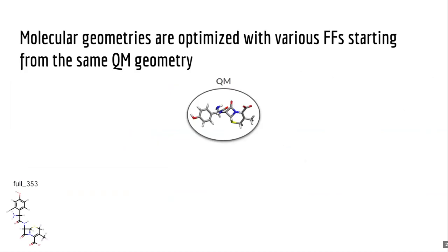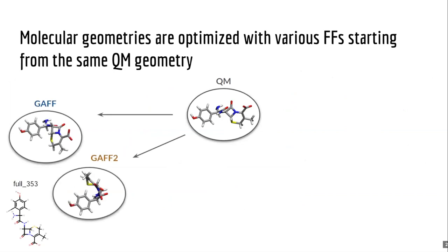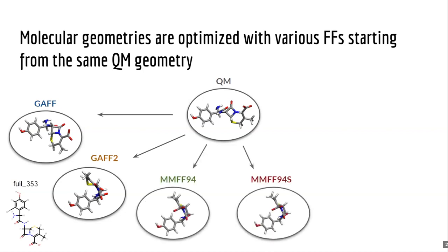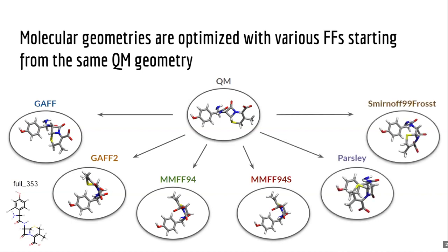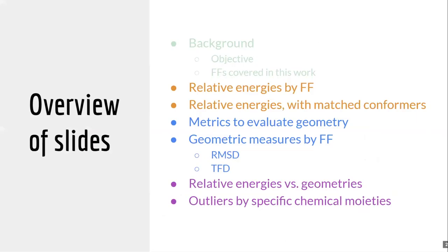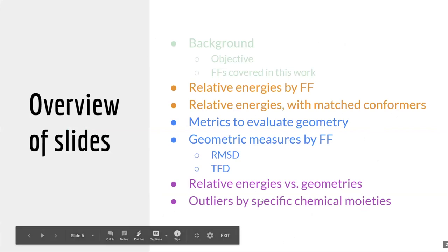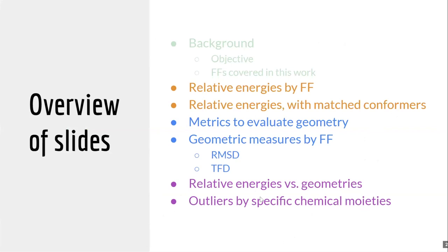In this work, we're looking at the General Amber Force Field GAFF and GAFF2, the Merck Molecular Force Fields MMFF94 and MMFF94S — which differ by slight changes in how nitrogens are represented — and finally some force fields from the Open Force Field Initiative, which are Parsley and SMIRNOFF99Frosst. As an overview of results, I'll be talking first about energies, then geometries, then look at them together and identify specific chemical moieties for future force field refinement.